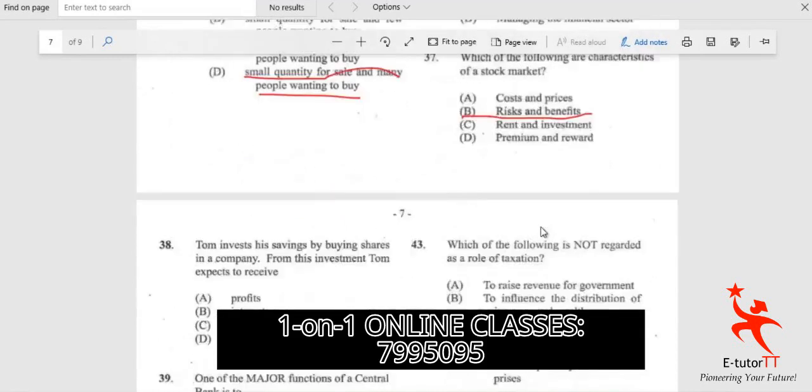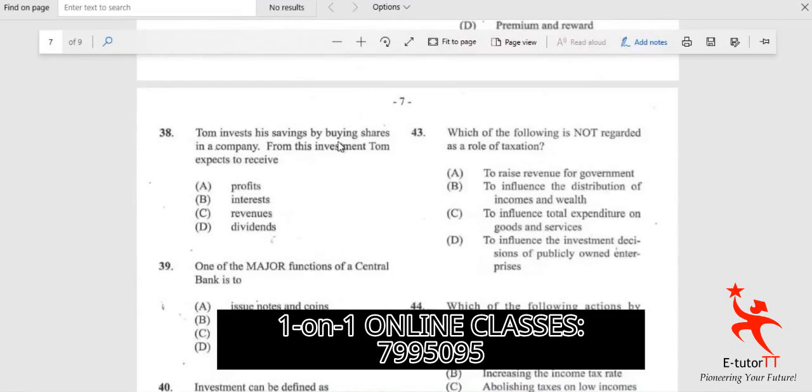Question 38: Tom invests his savings by buying shares in a company. From this investment, Tom expects to receive... When you have a return from purchasing shares, that return is a dividend.